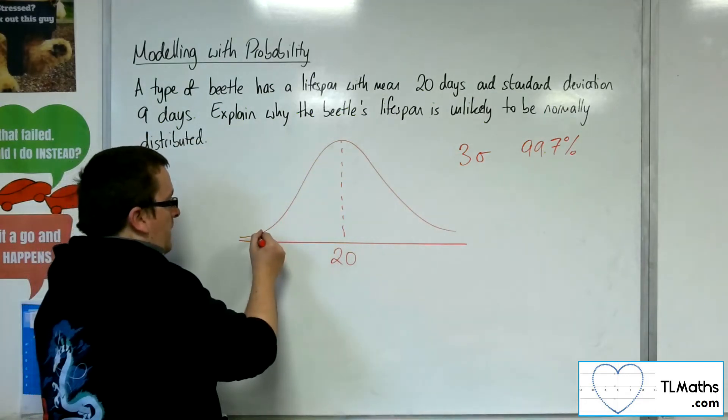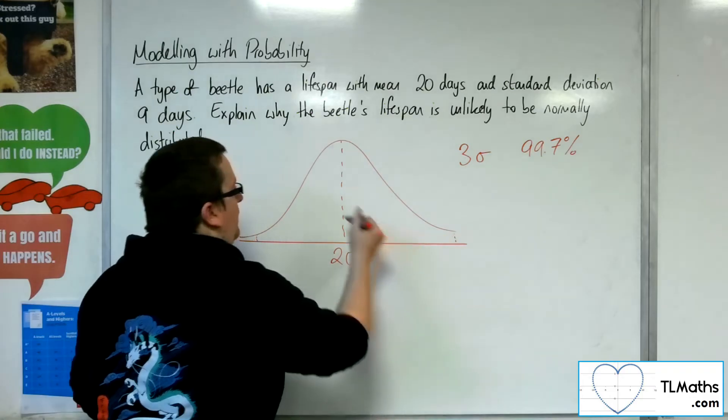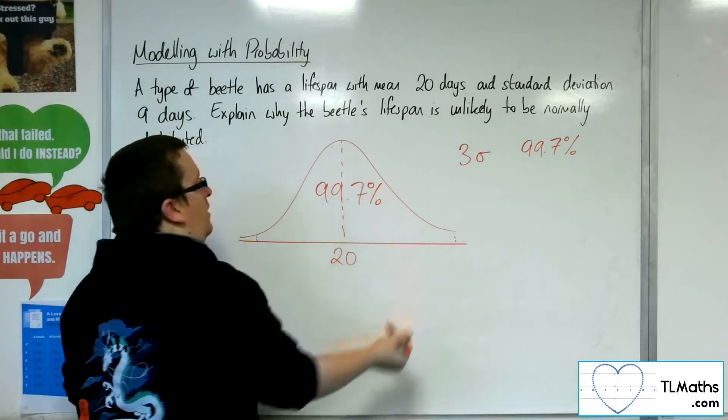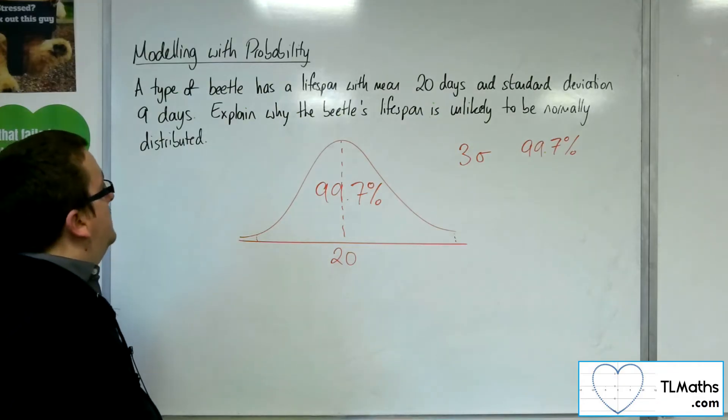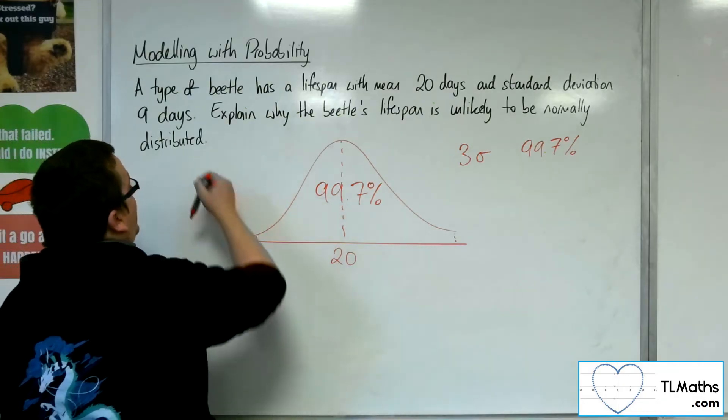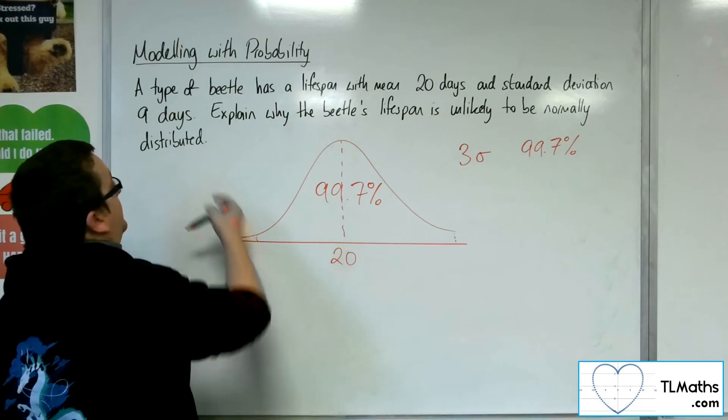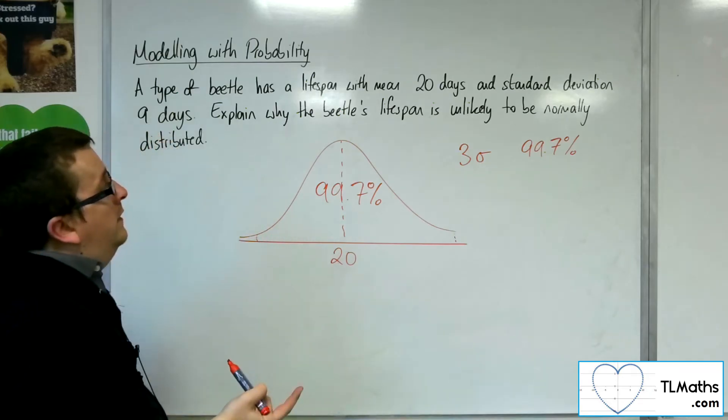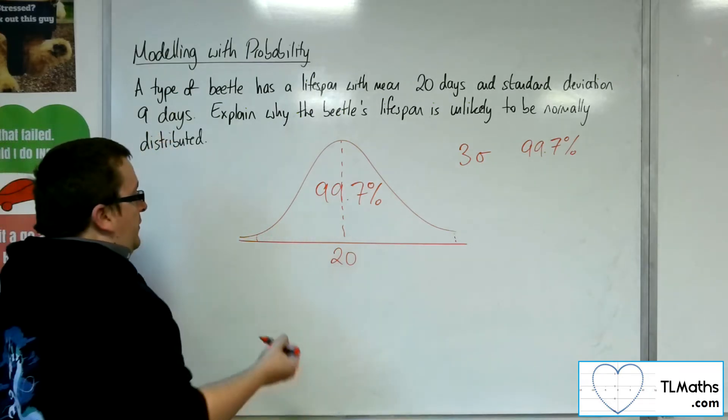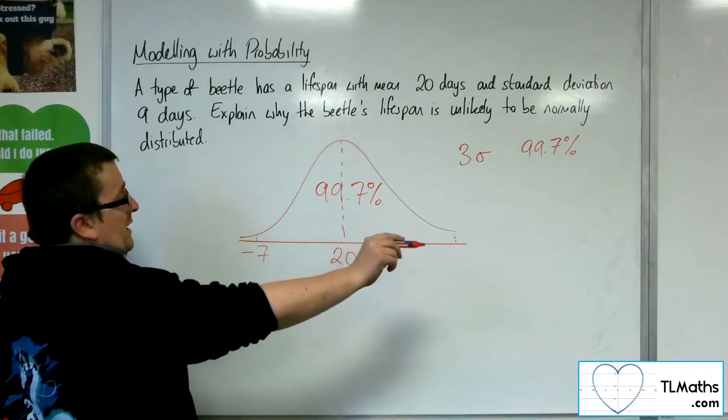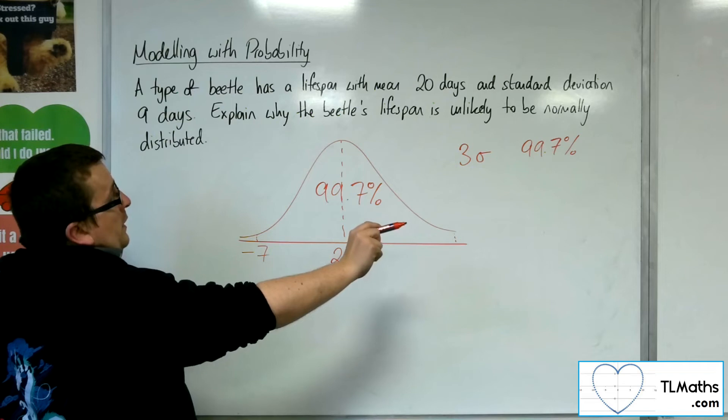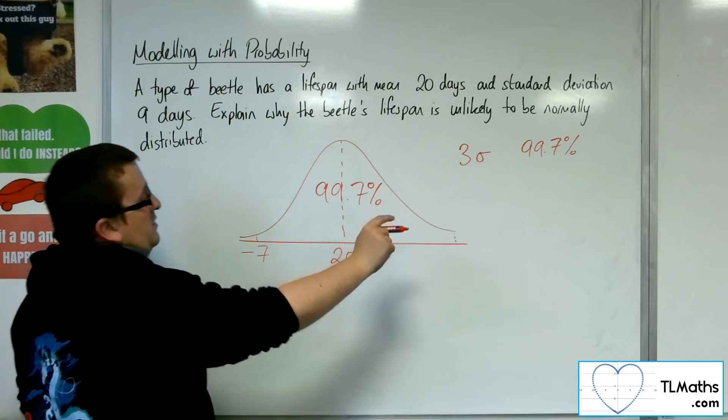So effectively, if 99.7% of the data is within three standard deviations of the mean, then three standard deviations down from 20 is 3 lots of 9, which is 27. So that would mean we're down at minus 7 here. Three standard deviations above would be 27 plus 20, so 47.